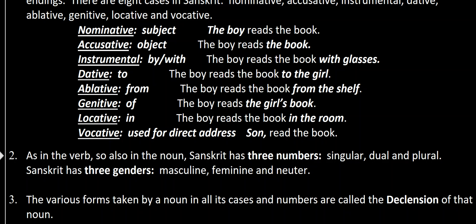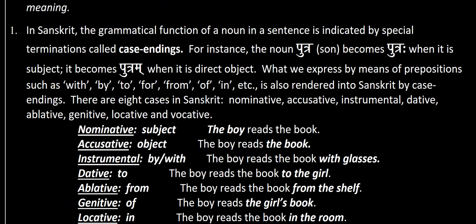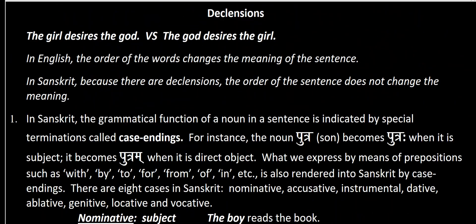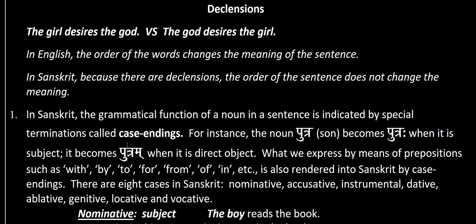The various forms taken by a noun in all its cases and numbers are called the declension of that noun. That is the definition of declension. In the next video we will move on to the actual Sanskrit and learn how to decline Sanskrit nouns.